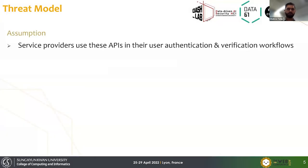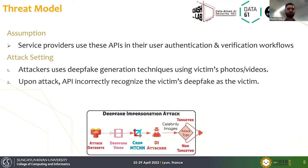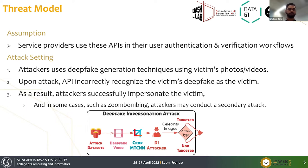Let's talk about the threat model. We made some assumptions that some service providers use these APIs in their authentication or verification workflows, as has been marketed by these APIs. For the attack setting, the attacker gets some photos of the victim and uses a deepfake generation method to generate deepfake photos or videos of the victim, then mounts an attack on these APIs. These APIs recognize the deepfake images or videos as real photos or videos of the victim, and as a result the attacker can impersonate the victim. In some cases the attacker can also apply a secondary attack, like we saw in Zoom Bombing recently.